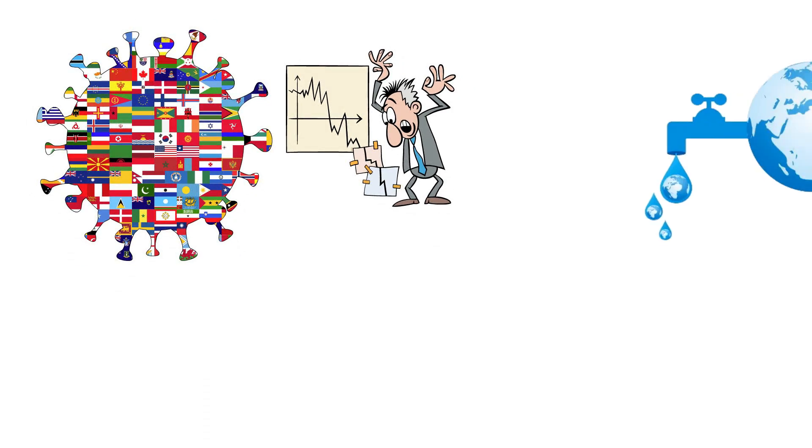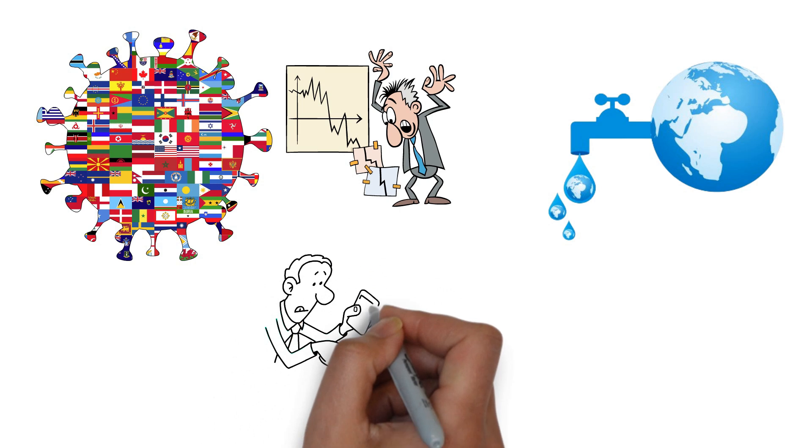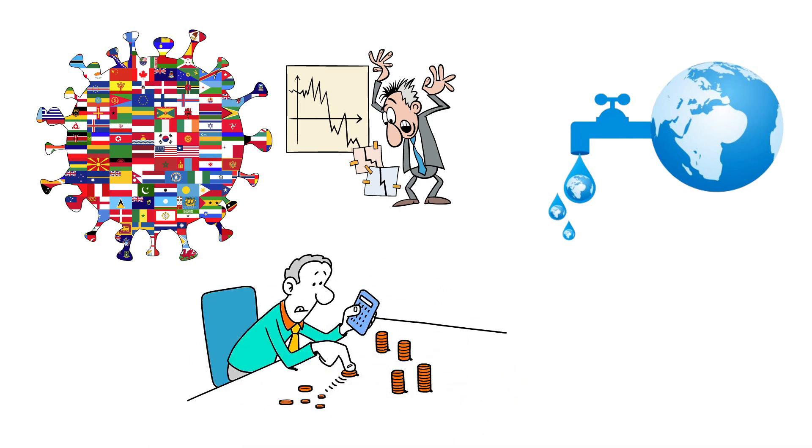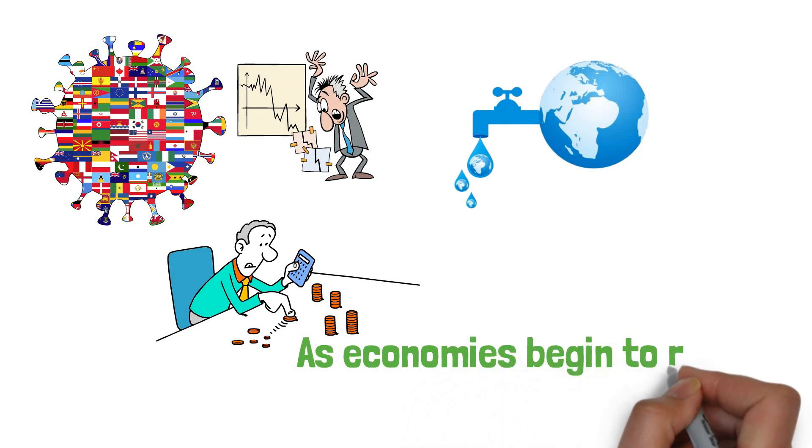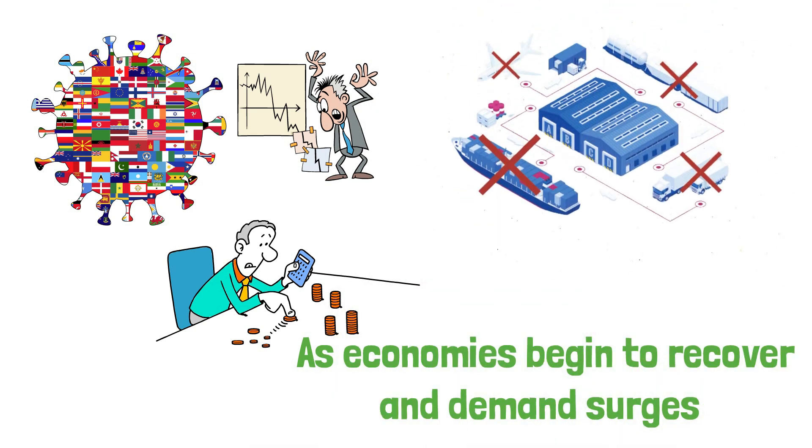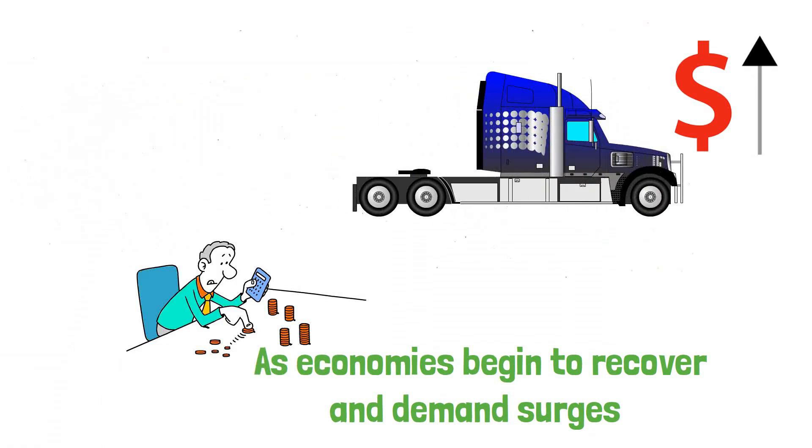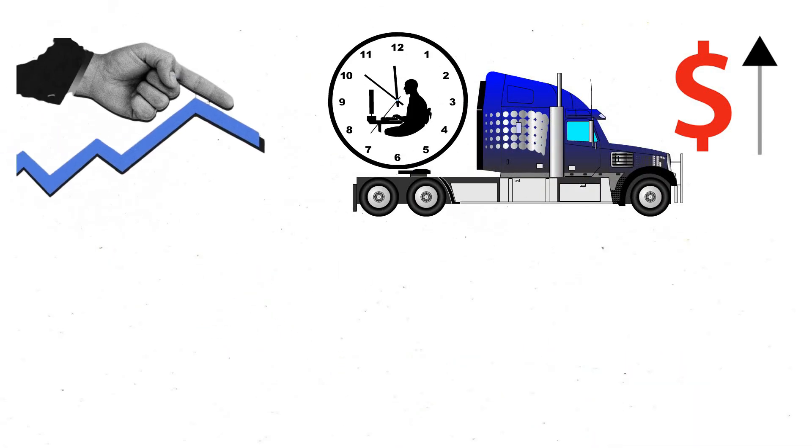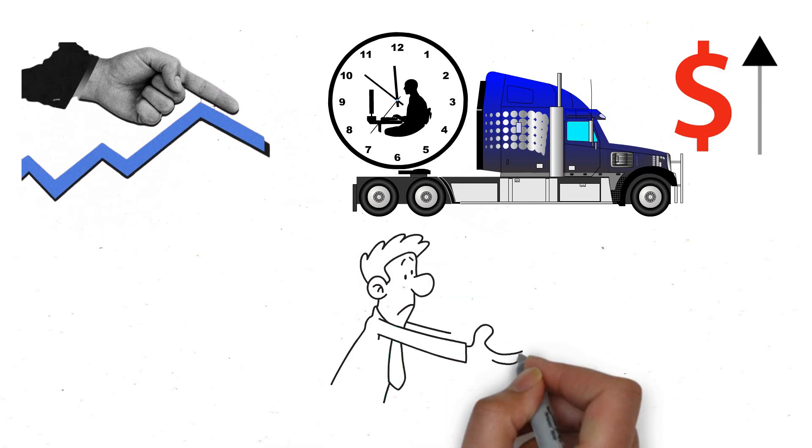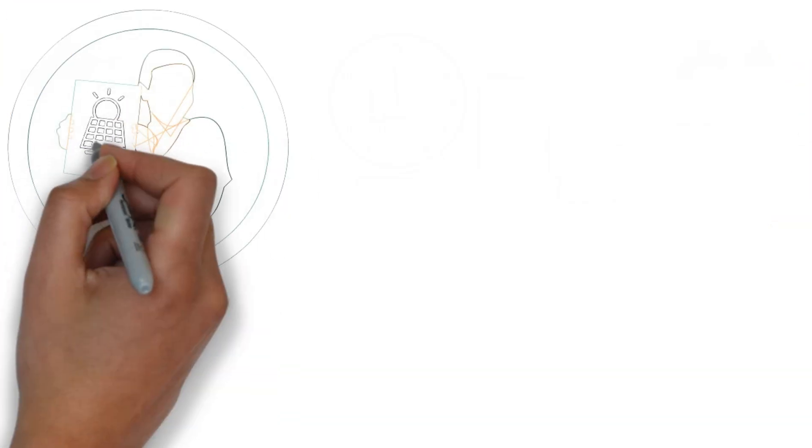The restructuring of global trade due to the pandemic has also been a significant factor in inflationary pressures. The disruptions in supply chains have caused shortages and bottlenecks, making it difficult for businesses to get the materials they need. As economies begin to recover and demand surges, these supply chain issues have not been resolved quickly enough, causing prices to rise.